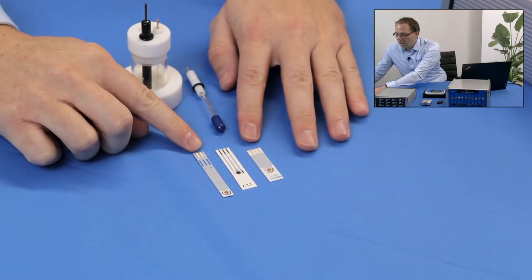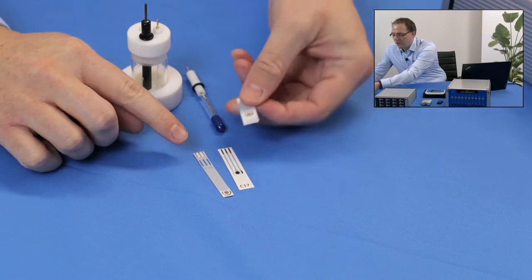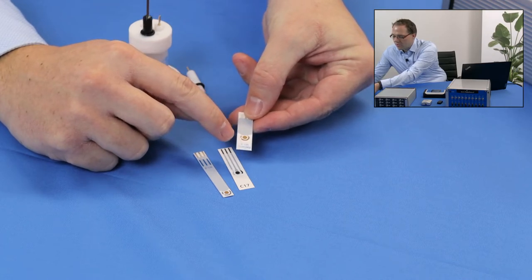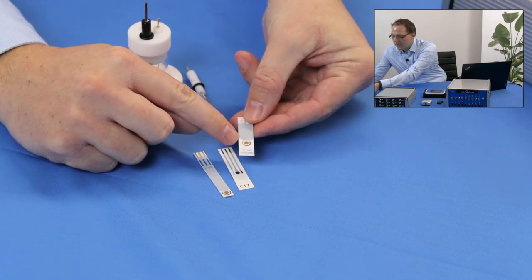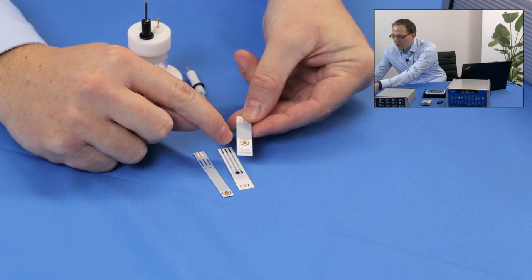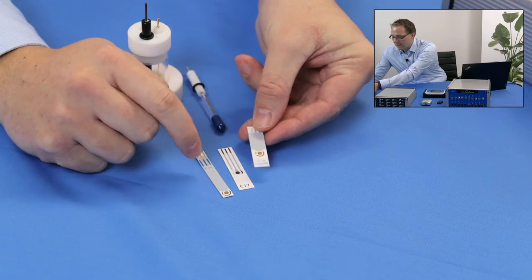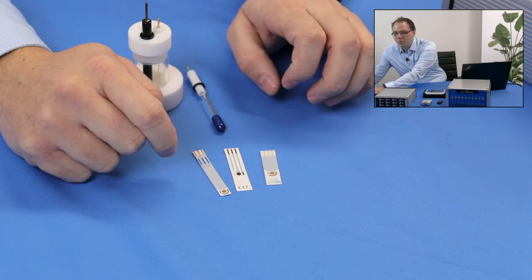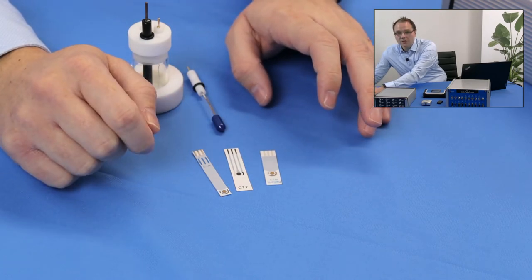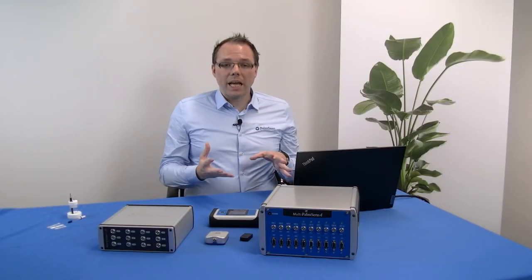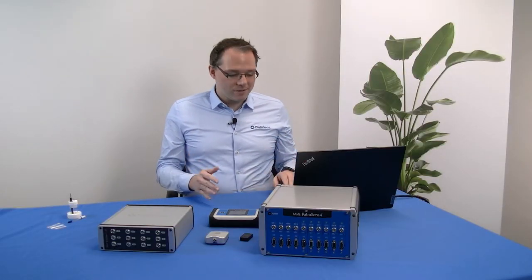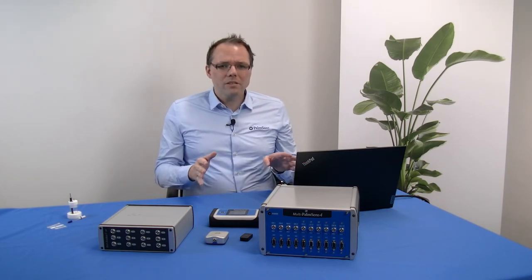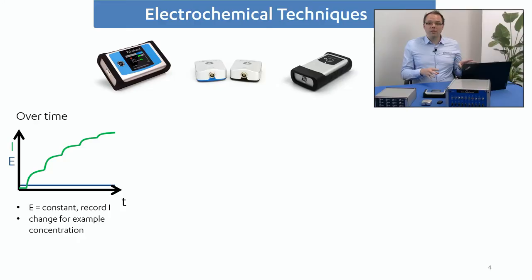Another option are screen-printed electrodes, which, for example, have three electrodes printed on a plastic sheet. You can see here in small and silver the reference electrode, and round in the middle made from gold the working electrode, and also a gold counter electrode as an arc at the side. These have the advantage that you can just put a droplet on it and do your measurement, or just throw them away afterwards. So now you have an idea what the three electrodes are, and already an idea what a potentiostat is.